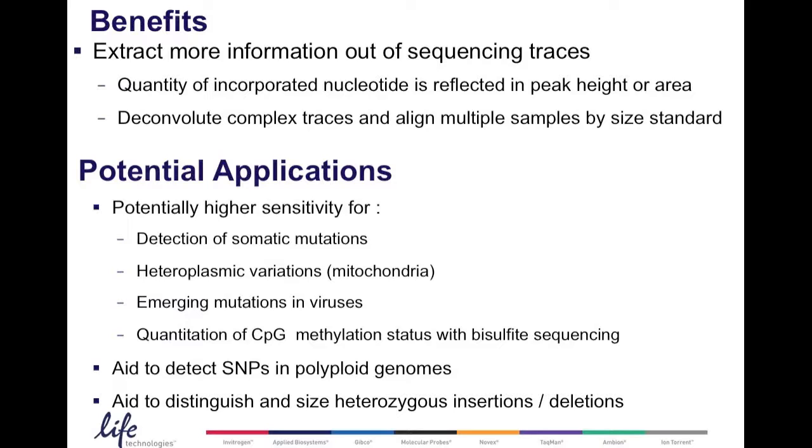The benefits of this method is that you can extract more information out of your sequencing traces. You get information on the quantity of the incorporated nucleotide, which is reflected in the peak height or area, and using GeneMapper it allows you to deconvolute complex traces and align multiple samples using a size standard.